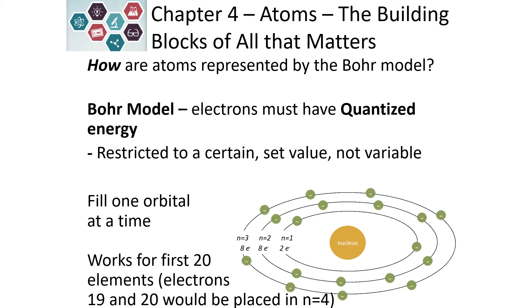We refer to these energy levels as N equals 1, N equals 2, and N equals 3. We fill one orbital at a time starting at the center and working out. This works for about the first 20 elements. If we do 19 and 20, we would draw an additional energy level that is N equals 4.